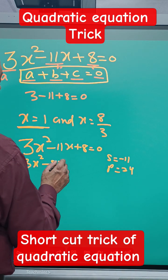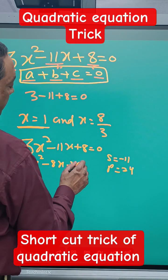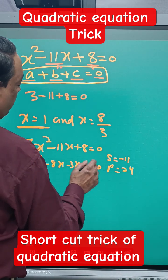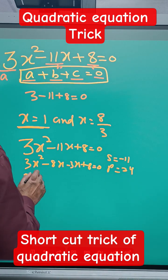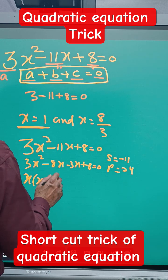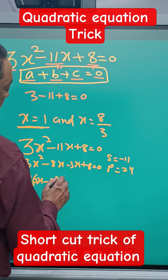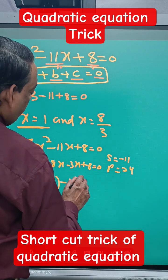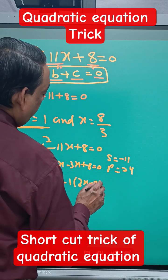So it will be 3x² - 8x - 3x + 8 = 0. This will be x(3x - 8) - 1(3x - 8) = 0.